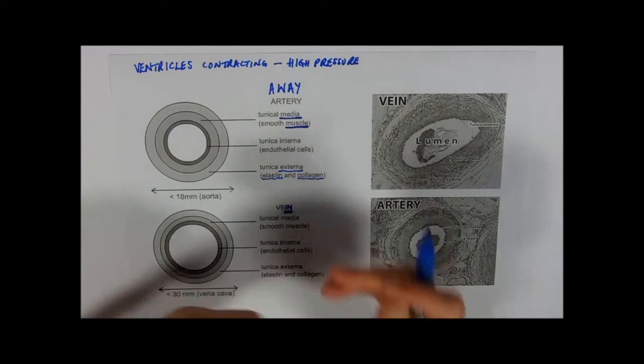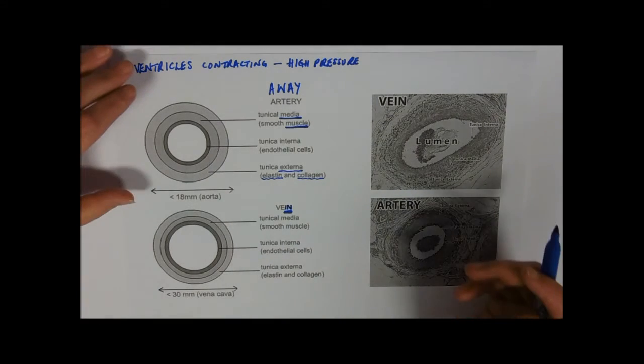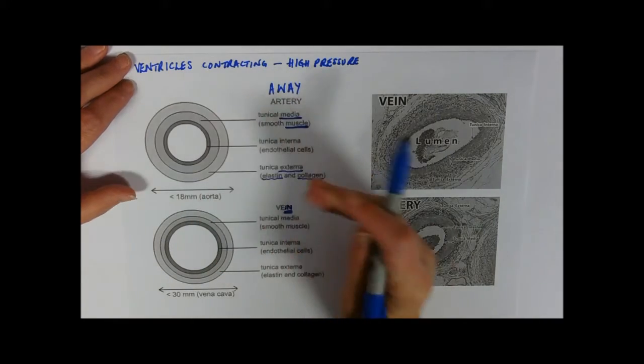The tunica interna is made of smooth endothelial cells. All they do is provide a nice smooth lining so that as the blood cells are going through the artery, they're not bouncing off rough surfaces. So we've got a very thick wall to the artery since it resists the pressure.